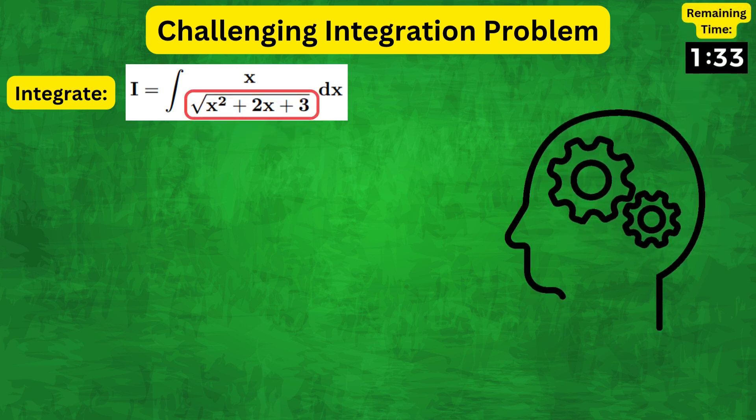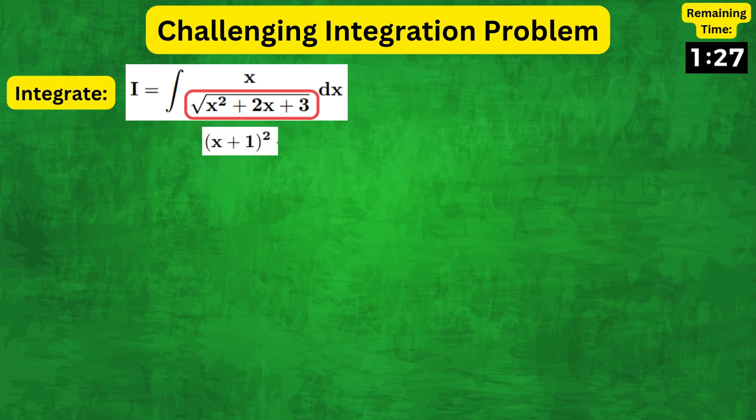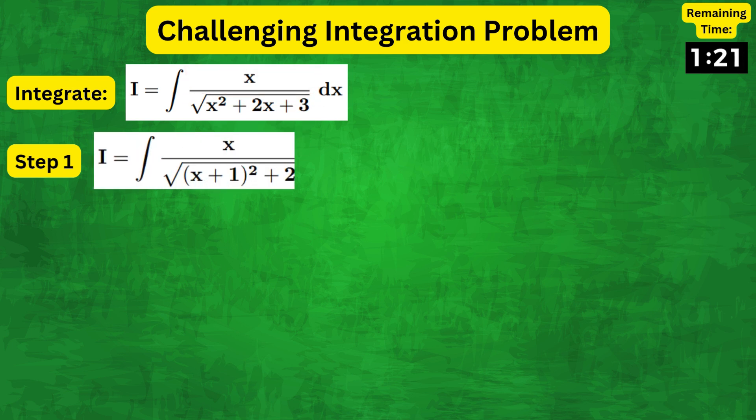The square root in this denominator makes the integration look complicated. But the trick is to complete the square to write the denominator as follows. Therefore, the integral can be written as x over square root of x plus 1 whole squared plus 2.